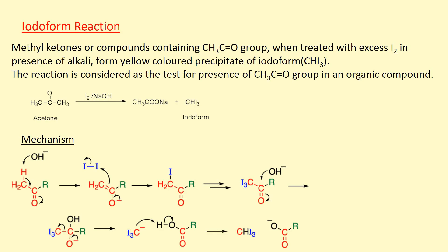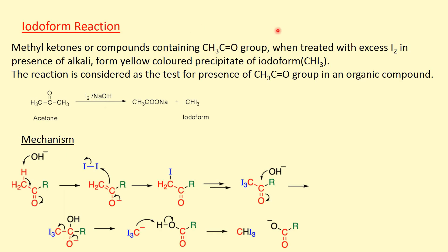What is the iodoform reaction? Methyl ketones, or any organic compounds that contain the CH3CO group in the structure, when treated with excess iodine in the presence of alkali, form a yellow crystalline compound known as iodoform, with formula CHI3. This reaction is given by only those compounds that contain the CH3CO group in the structure. That's why this reaction is considered as the test for the presence of the CH3CO group in an organic compound.